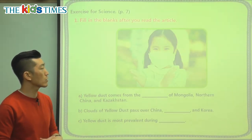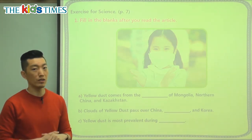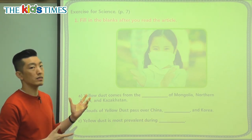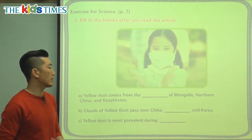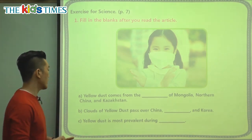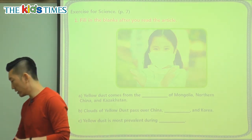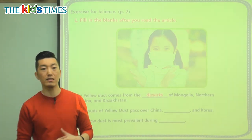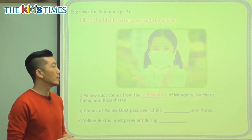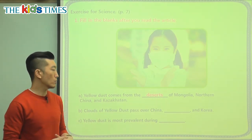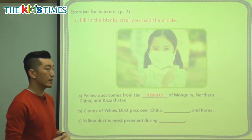If you look at this girl in the picture, she's wearing one type of mask, saying the air is not clean right now because of the yellow dust. Yellow dust comes from the deserts of Mongolia, Northern China, and Kazakhstan. Deserts are areas where they get very little or no rain. We don't have deserts in Korea, but there are a lot of deserts in this part of Asia.